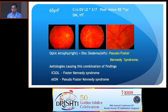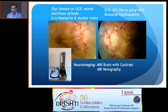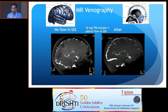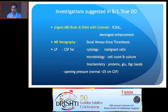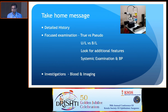A 35-year-old lady on oral contraceptive pill with diarrhea — causing a hypercoagulable state — presented with headache, double vision due to sixth nerve palsy, and papilledema. MRV showed superior sagittal sinus thrombosis; with anticoagulation she made a good recovery. In all cases of bilateral disc edema, MRI and MRV should be done. Take-home message: detailed history, focused examination, true versus pseudo, unilateral versus bilateral, look for additional features, systemic examination, blood pressure, investigations — blood and imaging — will give you the diagnosis.